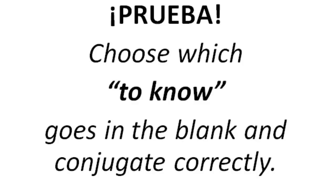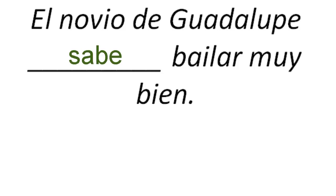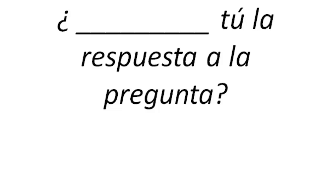Let's take a quiz, una prueba. Choose which verb goes in the blank and then conjugate it correctly. El novio de Guadalupe ___ bailar muy bien. The answer is saber — sabe, because it's knows how to dance. El novio de Guadalupe sabe bailar muy bien. Next: ___ tú a muchas personas de nuestra escuela? It would be conocer because we're talking about knowing people — conoces. ¿Conoces tú a muchas personas de nuestra escuela?